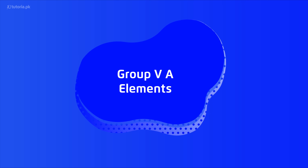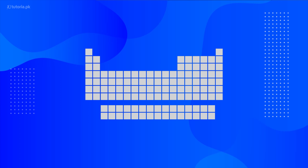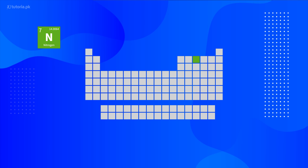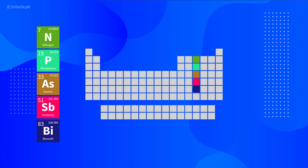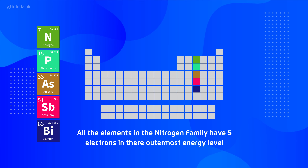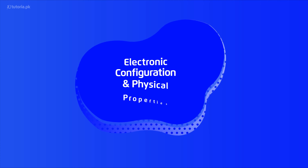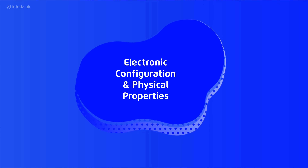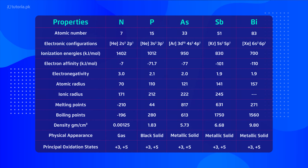Let's have a brief overview of Group 5A elements — nitrogen, phosphorus, arsenic, antimony, and bismuth — also called the nitrogen family. They have five electrons in their outermost shell.